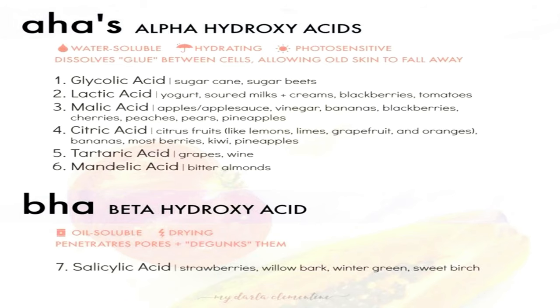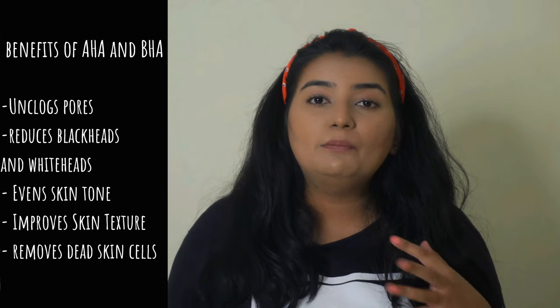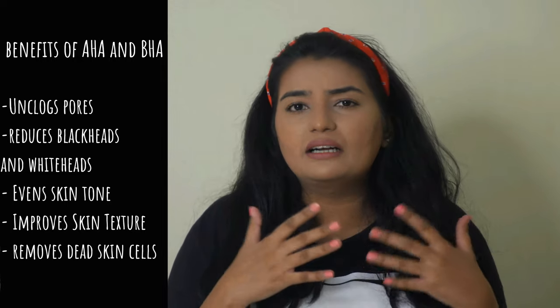Before getting into the actual review, let me tell you all what alpha hydroxy acid and beta hydroxy acid are. AHA is a water-soluble acid and BHA is oil-soluble. Both acids are extracted from fruits. The most common examples of alpha hydroxy acid are glycolic acid, citric acid, and lactic acid. And the BHA most commonly seen in skincare is salicylic acid.